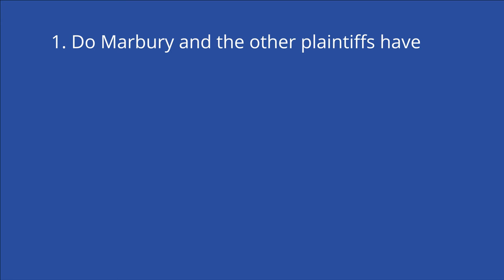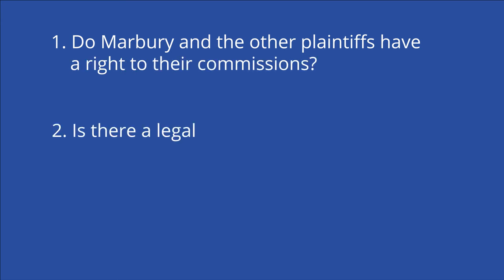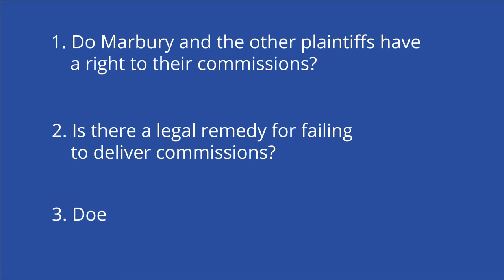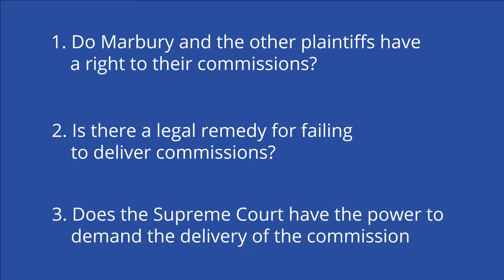Article 3 of the Constitution describes the power of the judicial branch, but does not mention the power to review the constitutionality of the actions of the other two branches. Chief Justice John Marshall and the rest of the Supreme Court had three questions to answer: first, if Marbury and the other plaintiffs had a right to their commissions; second, if there was a legal remedy for failing to deliver commissions; and finally, if the Supreme Court had the authority to demand the delivery of the commissions.